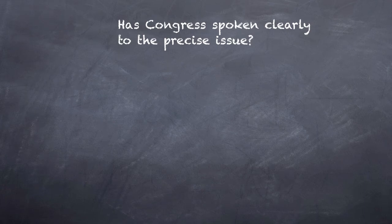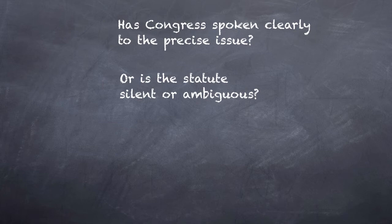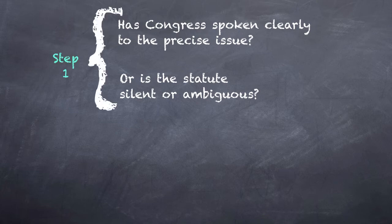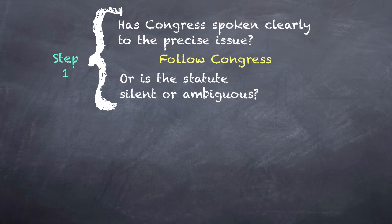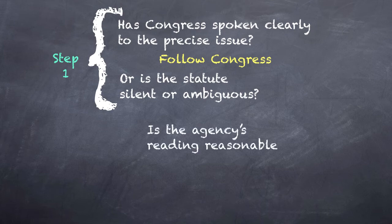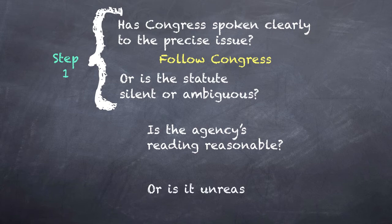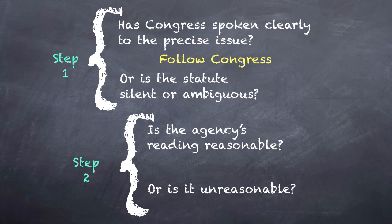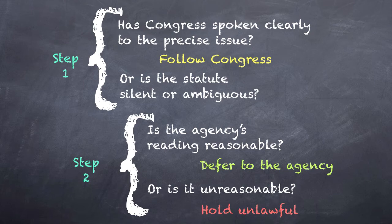The first question for the court is: has Congress spoken clearly to the precise issue, or is the statute silent or ambiguous? This is called Chevron Step One. If Congress has spoken clearly and directly, the inquiry is over — the court and the agency are to follow Congress. But if the statute is silent or unclear, the next question is not what is the best reading of the statute but rather: is the agency's reading unreasonable? This is Step Two. If the agency's reading of an ambiguous statute is reasonable, the court is to defer to the agency; otherwise it holds the agency action unlawful and sets it aside.